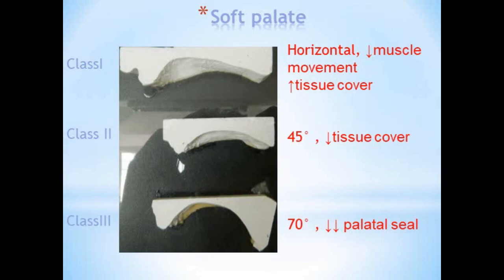The classification of the soft palate is based on the degree of flexure the soft palate makes with the hard palate. Class 1 is horizontal with very little muscular movement — the most favorable, as it provides more tissue coverage for the palatal seal. Class 2 is where the soft palate turns downward at about 45 degrees to the hard palate, with comparatively less tissue coverage. Class 3 is where the soft palate turns downward sharply at about 70 degrees — the least favorable position due to very little palatal seal.